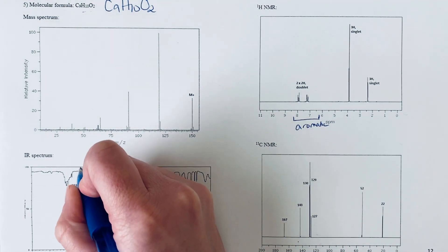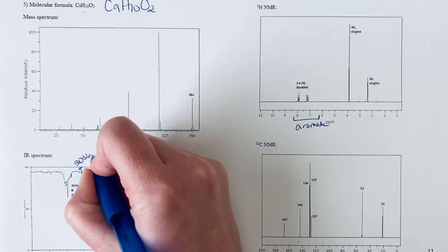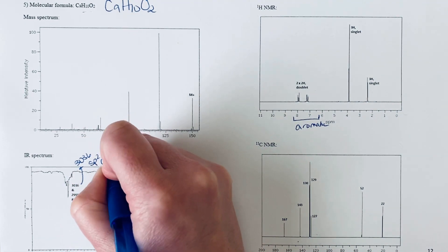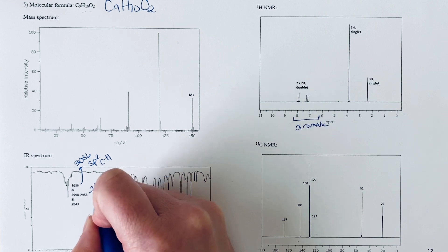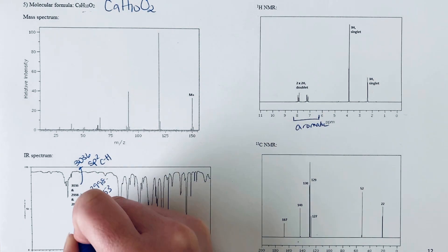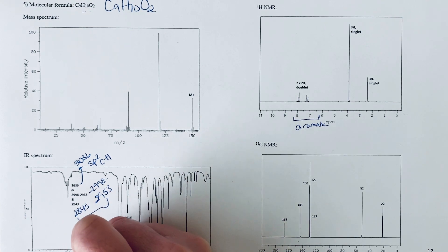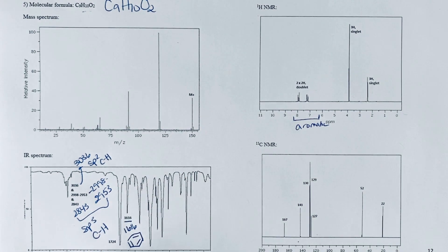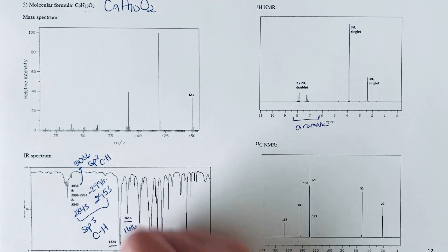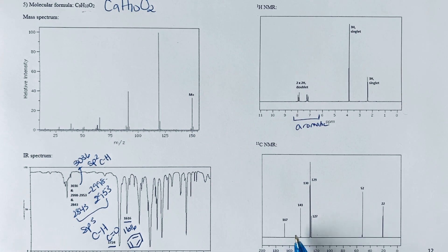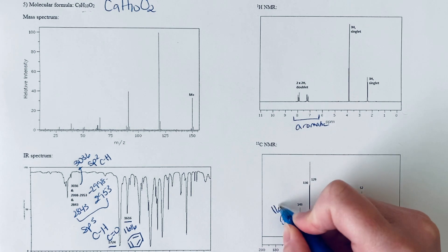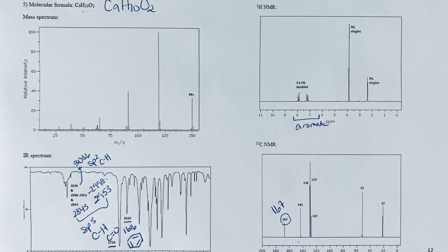Let's look a little bit more at this IR. 3036, that's our sp2 CH, so that would be hydrogens attached to that benzene ring. Got this 2998 to 2953 and another peak at 2843—all of these are in the range of sp3 carbon-hydrogen. Then finally we've got this really intense peak at 1724, so that's a carbonyl.